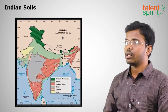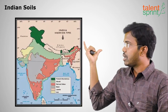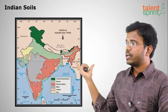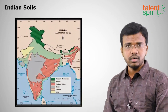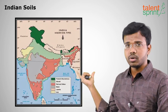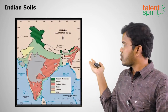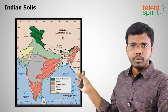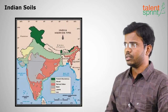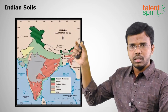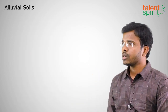Looking at the Indian soil map, the dark green parts in Jammu and Kashmir are mountain soils. The light green parts are alluvial soils. Black soil or regur soil is shown, and the red portions are red or yellow soils. The northeastern region is dominated by most soil types. The laterite soils are found along the Western Ghats.